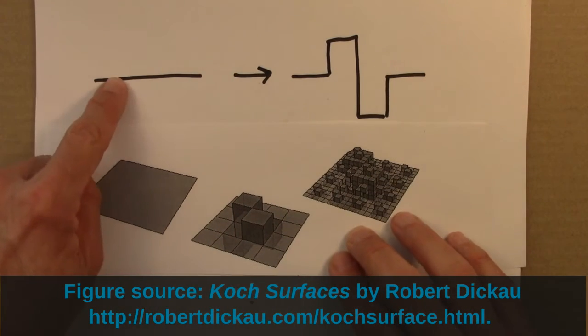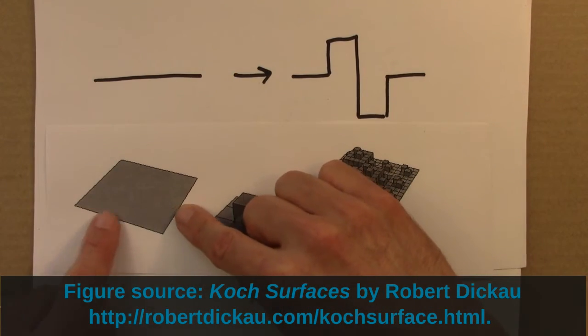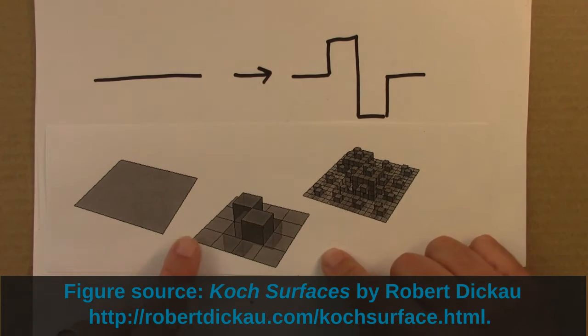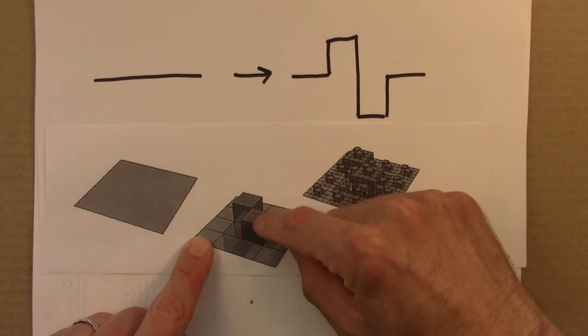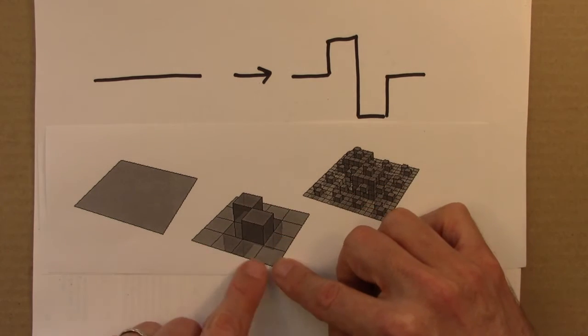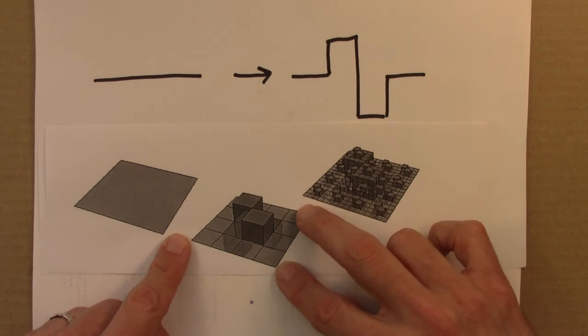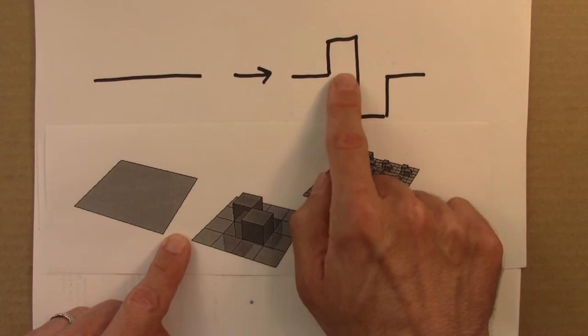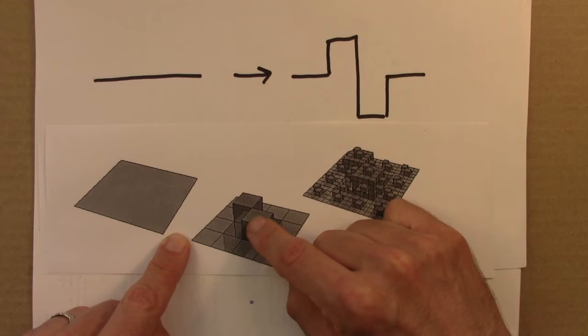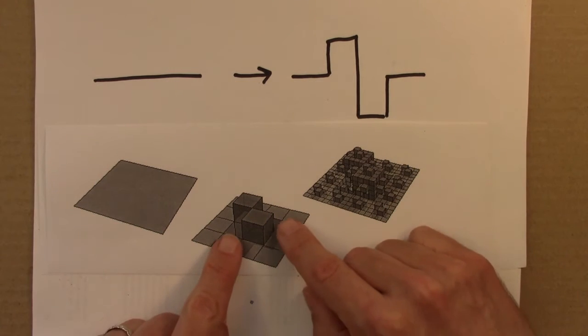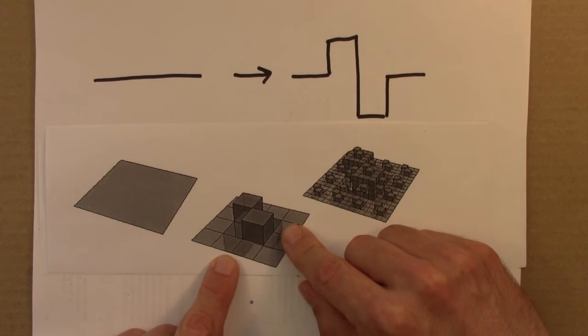So we start not with a line but with a square, so a surface in two dimensions. And then we bump it up and down. So we divide this into 16 little squares just like this gets divided into 1, 2, 3, 4. And then two of them we bump up by a certain amount.